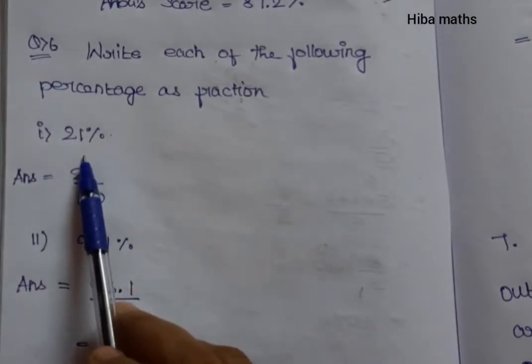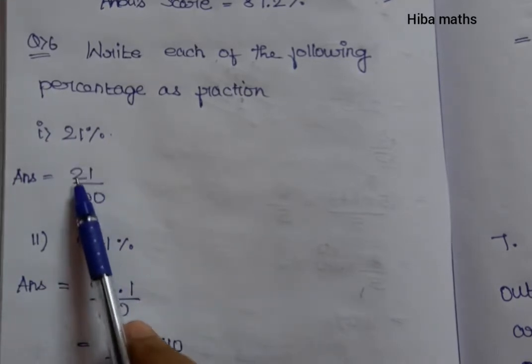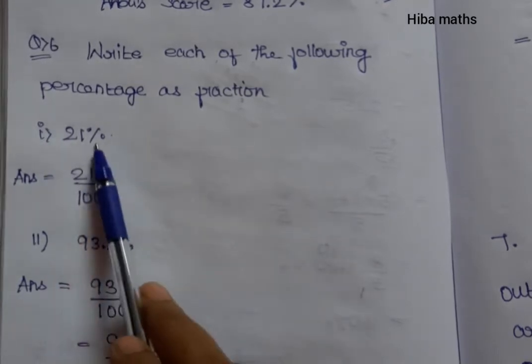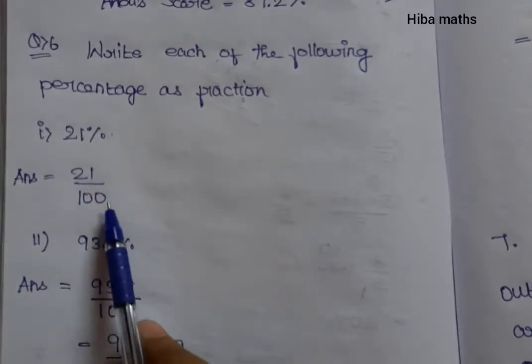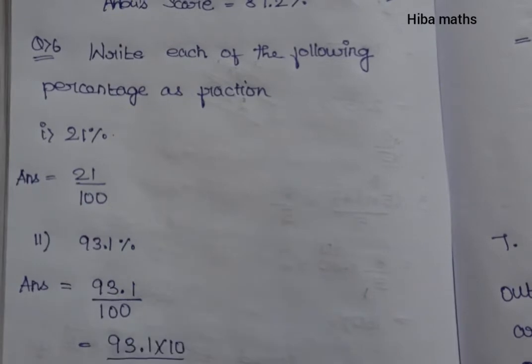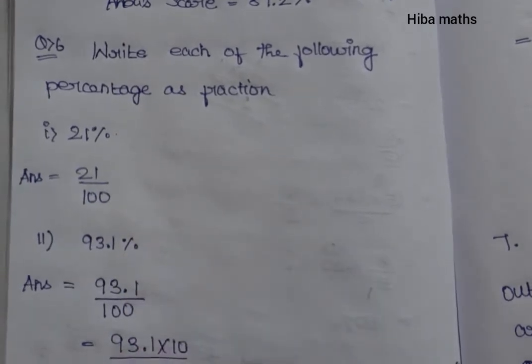21%. So 21% divided by 100 equals 21 over 100. This is our answer. It's very easy to answer, a quick question.